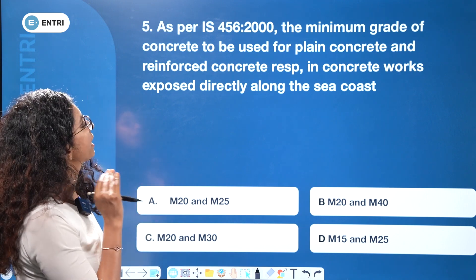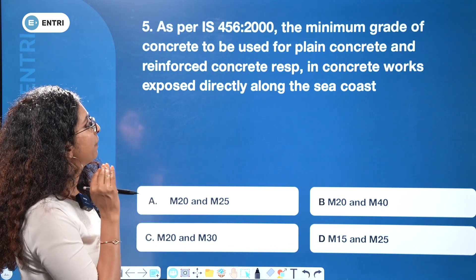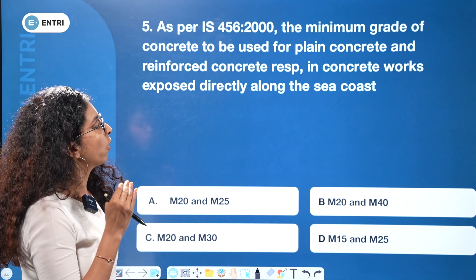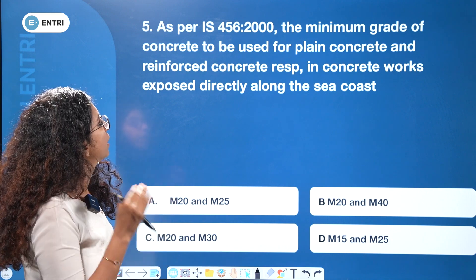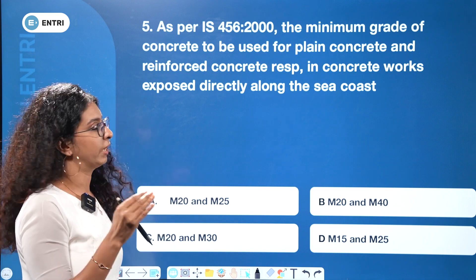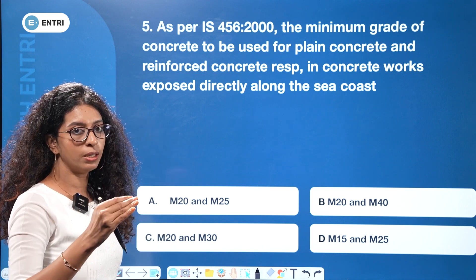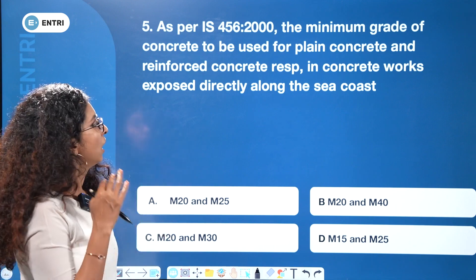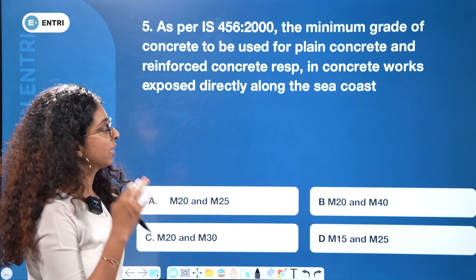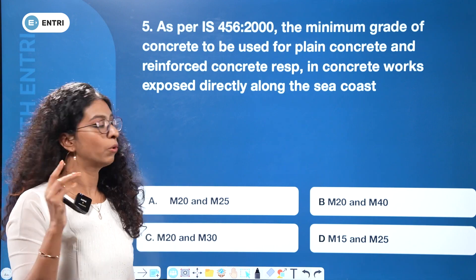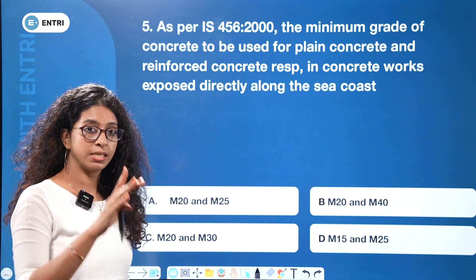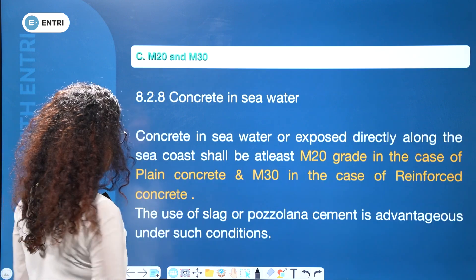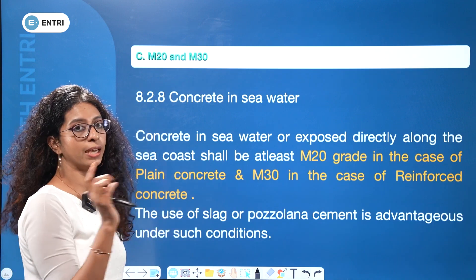As per IS-456-2000, the minimum grade of concrete to be used for plain concrete and reinforced concrete respectively in concrete work exposed directly along the sea coast — the answer is M20 and M30.